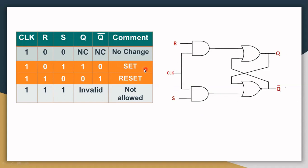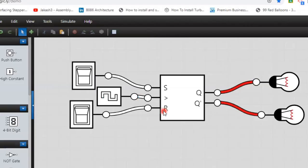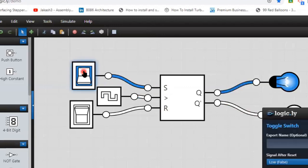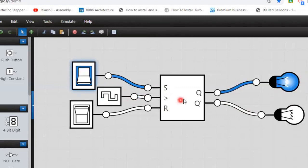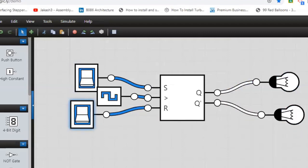When S is equal to one and R is equal to zero, it goes to the set state only when the clock pulse is high. When S is equal to zero and R is equal to one, it goes to the reset state only when the clock is high. When both inputs are high, that is an invalid state.